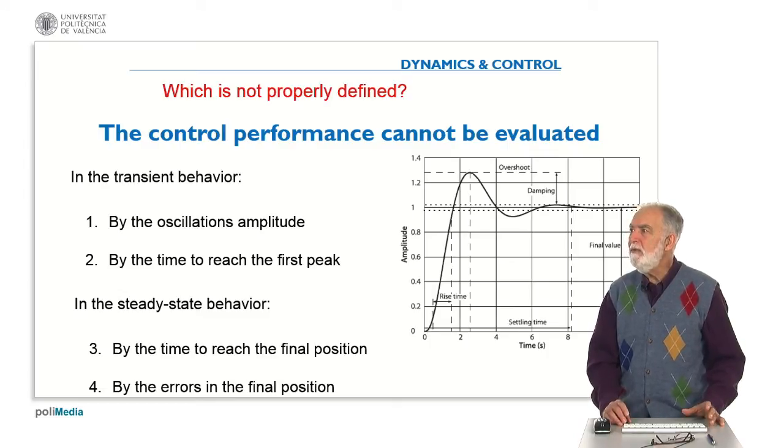And the question is, which is not properly defined? The amplitude of the oscillations characterizes the control performance or the time to reach the first peak or the time to reach the final position or the errors in the final position.